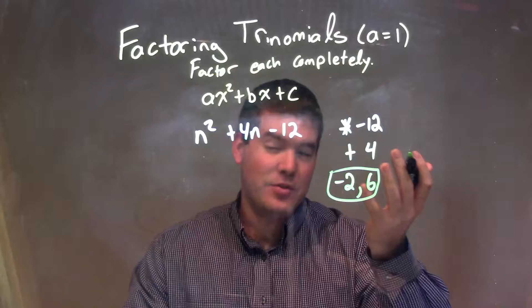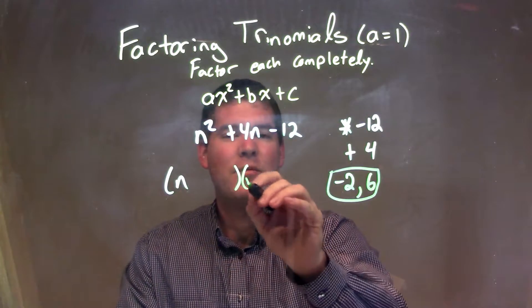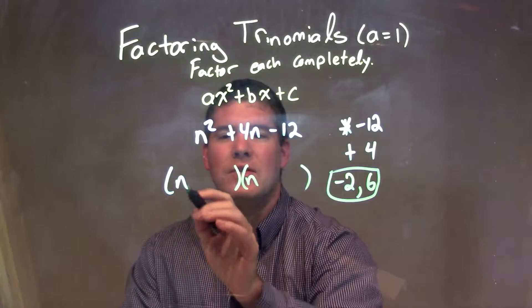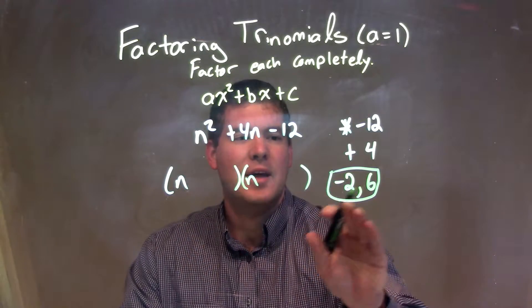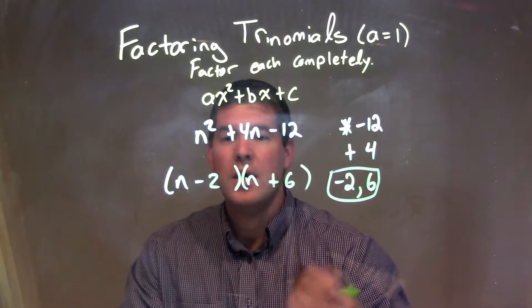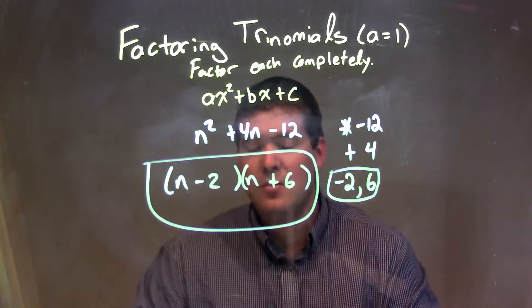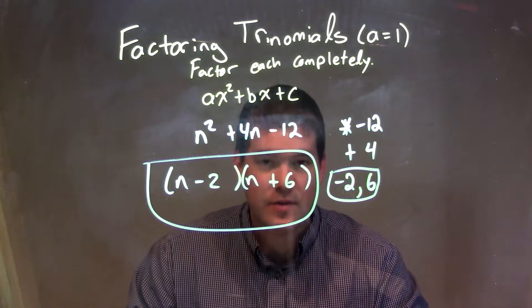Because -2 plus 6 is 4, right? So when I break this down into parentheses, I'm going to take those two numbers that I found and write (n - 2) and (n + 6). There we have it. The final answer here is just (n - 2)(n + 6).